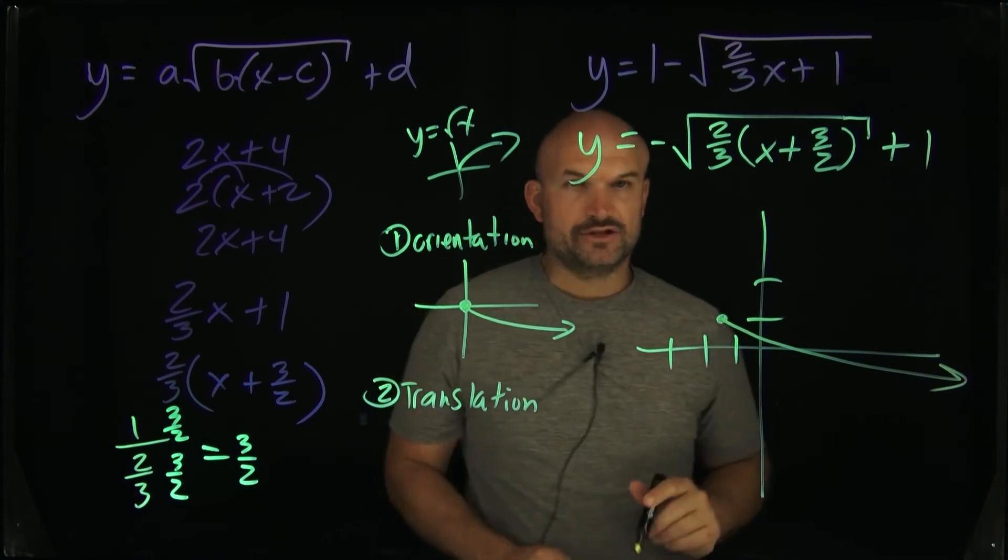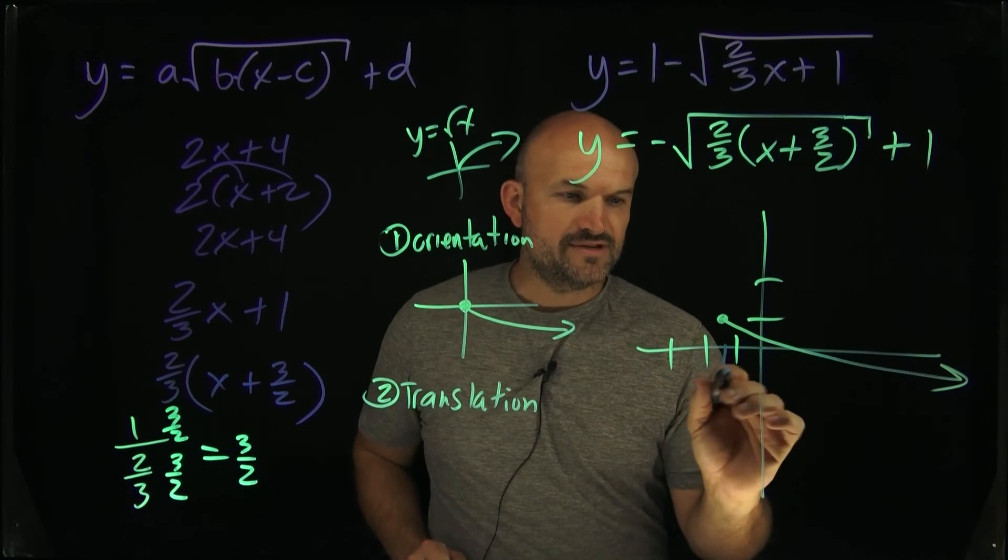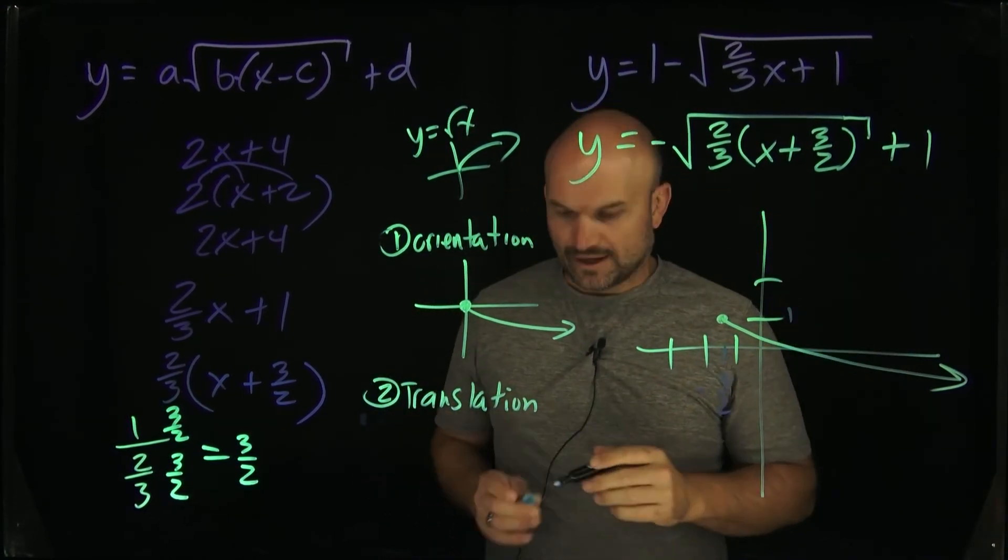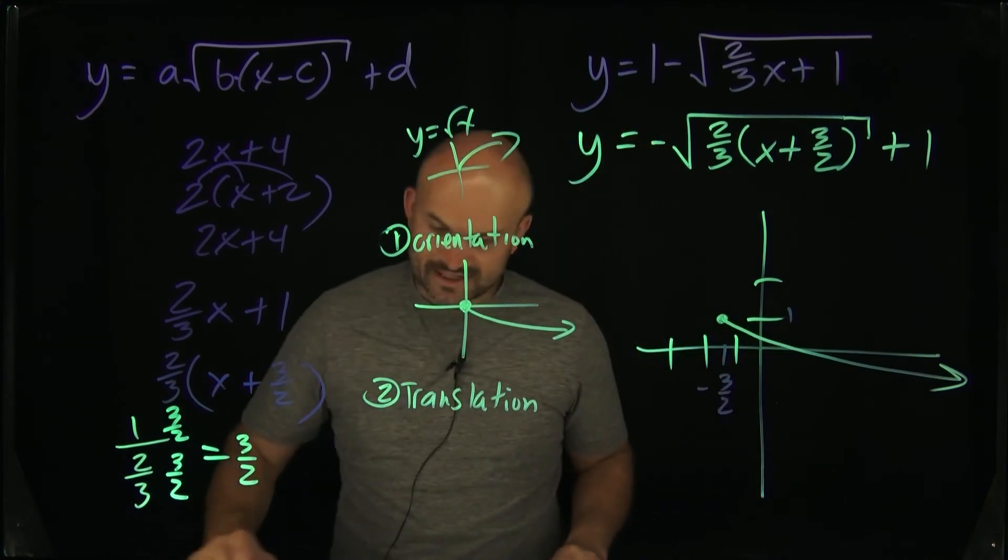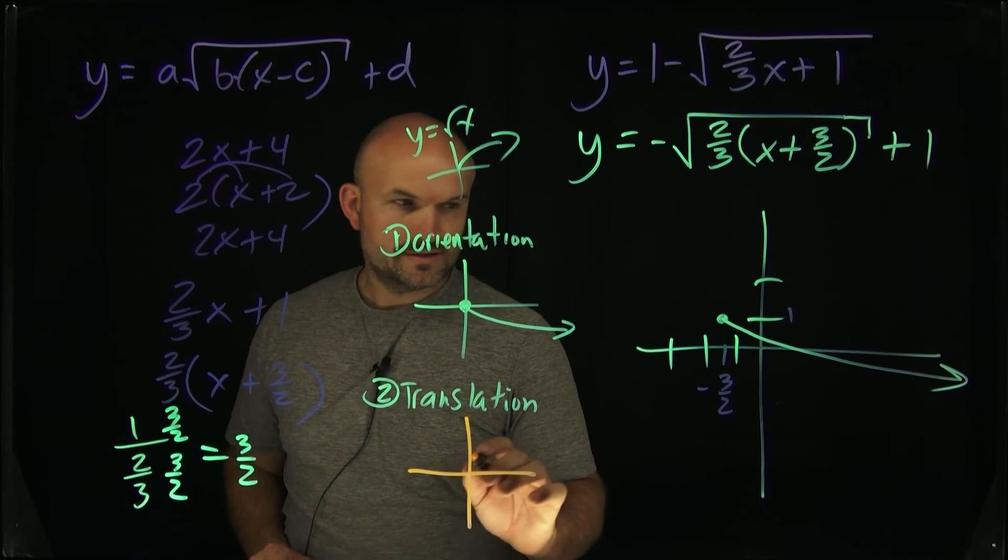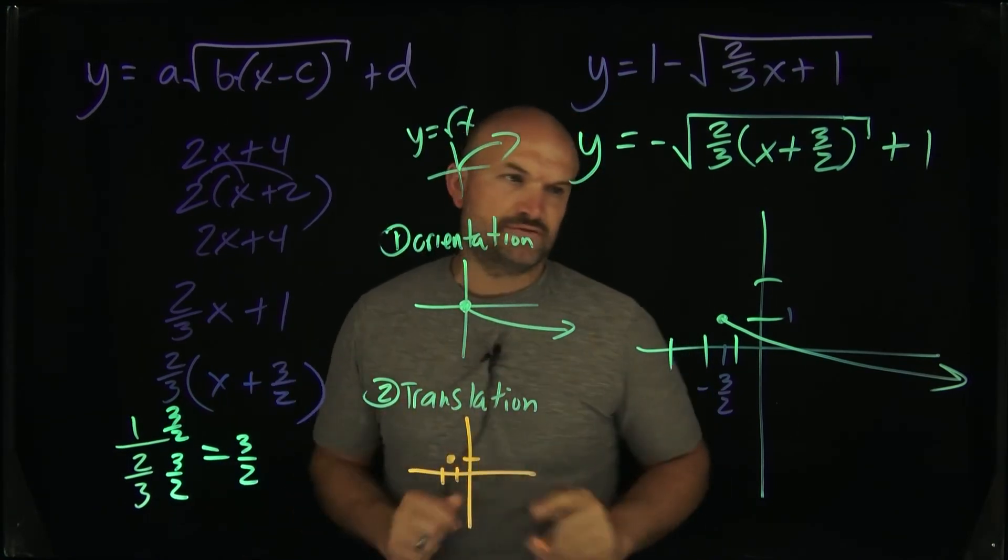Now we can identify the domain and range because again, this is very important to recognize how far left is this graph? Well, that's going to be at a negative three halves. How high is this graph? Well, that's at a one. The reason why that's important is because when I want to identify my domain and range, let's actually, let me graph this. So, just make sure you go from there and then you shift it left to right.